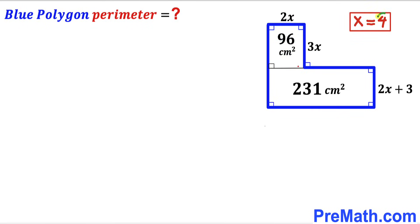With x equal to 4, we substitute into each expression. For 2x: 2 times 4 gives us 8 centimeters. For 3x: that gives us 12 centimeters. And for 2x plus 3: 2 times 4 is 8, plus 3 is 11 centimeters. So our three known side lengths are 8, 12, and 11.